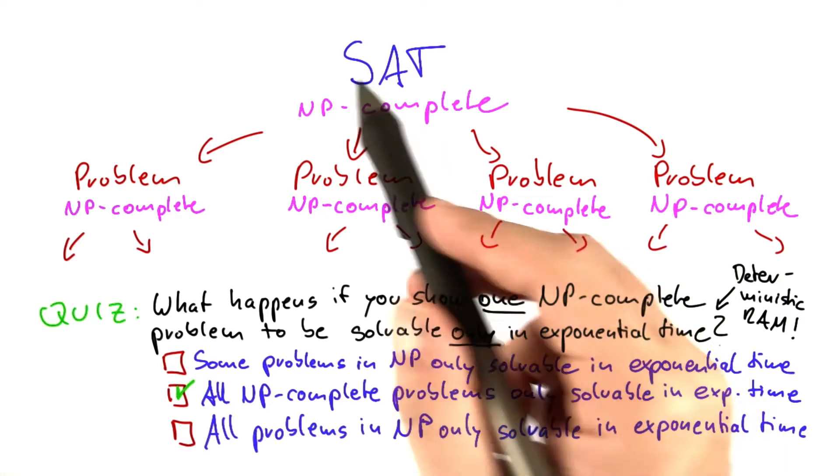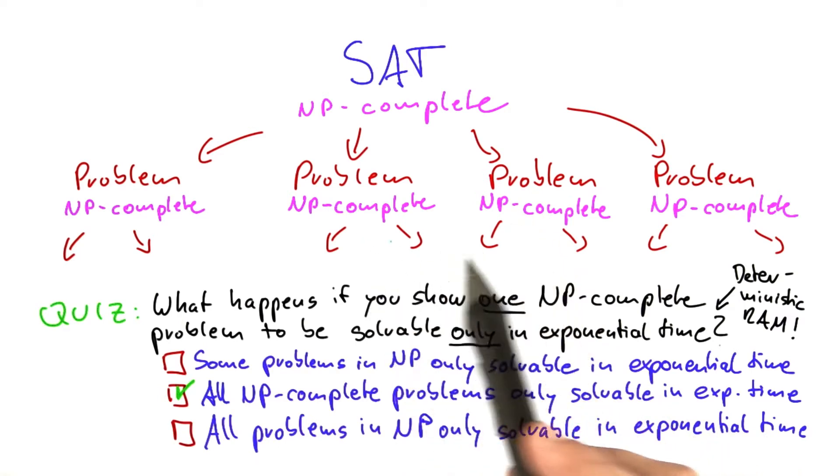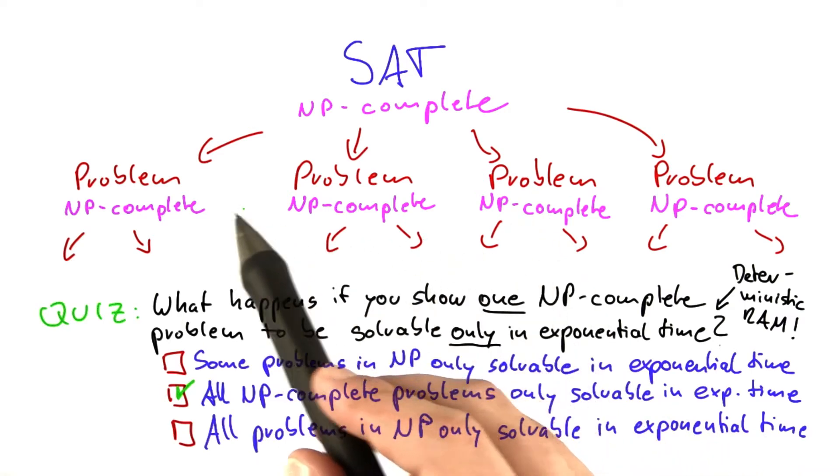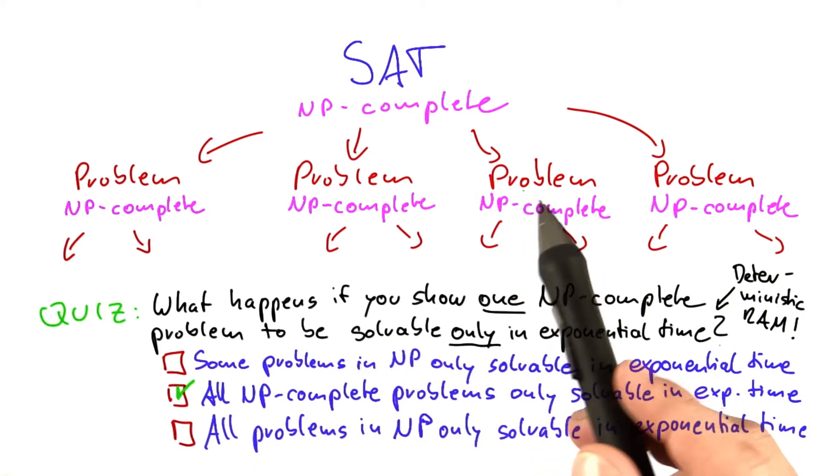And the reason for that is that all NP-complete problems are connected to each other using polynomial time reductions. So if one of them requires exponential time and another one requires polynomial time, then that just cannot be.